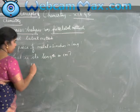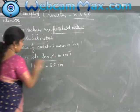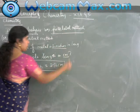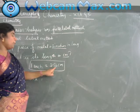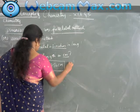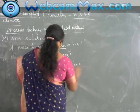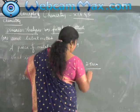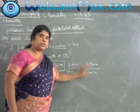So let me write: 1 inch is equal to 2.54 centimeters. I can write this in either way — as 2.54 centimeters over 1 inch, or as 1 inch over 2.54 centimeters. Both are equal.